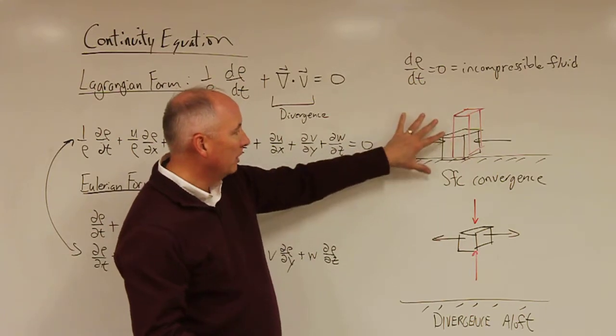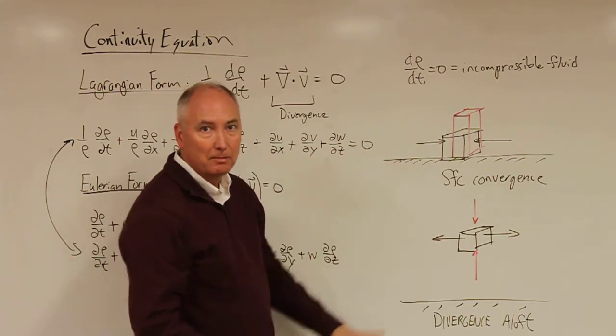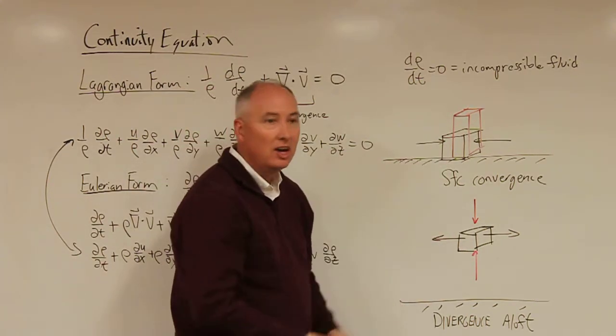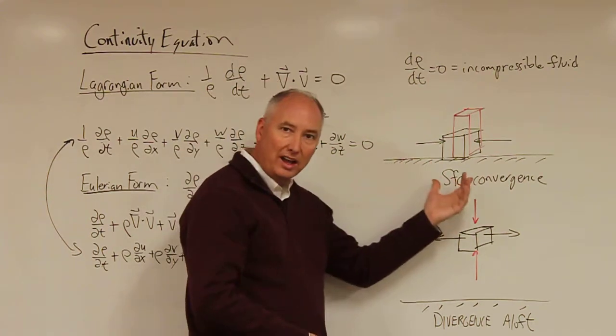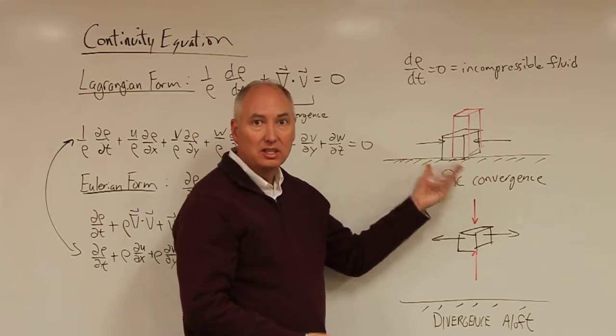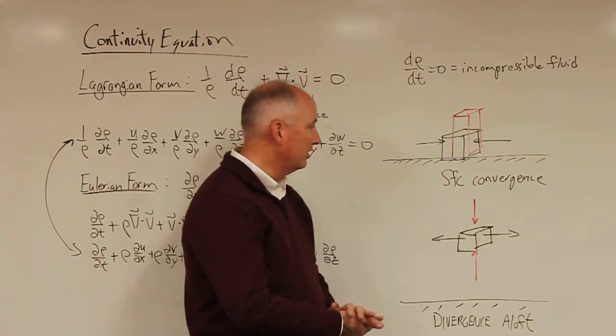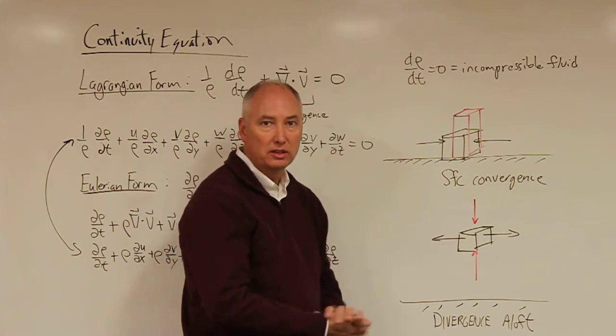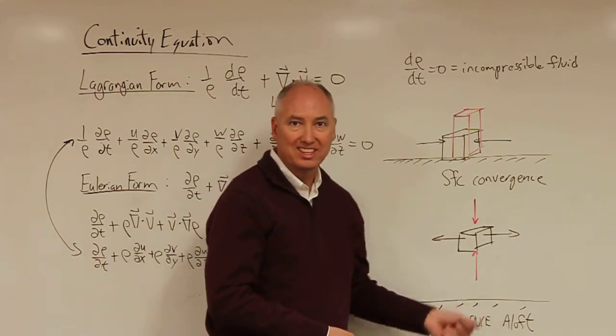And so what we're going to do is we're going to essentially create the mathematical formulation that allows us to describe vertical motions or horizontal motions that are associated with convergence and divergence in the atmosphere.